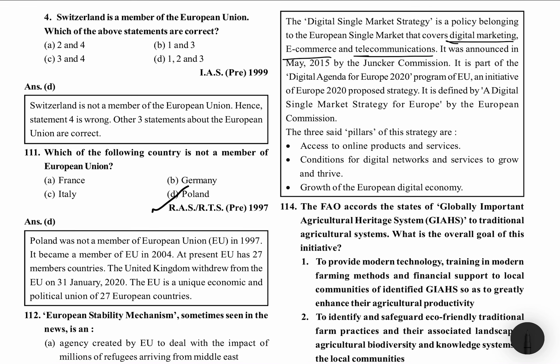This was announced in May 2015 by the Juncker Commission. This is a part of the Digital Agenda for Europe 2020 program. It is defined by a Digital Single Market Strategy for Europe by the European Commission. The three set pillars of this strategy are: access to online products and services, conditions for digital networks and services to grow and thrive, and growth of the European digital economy.